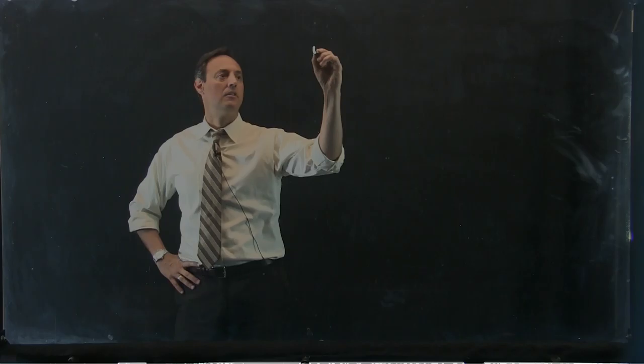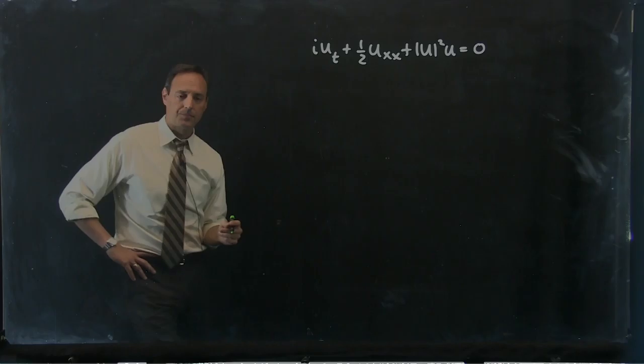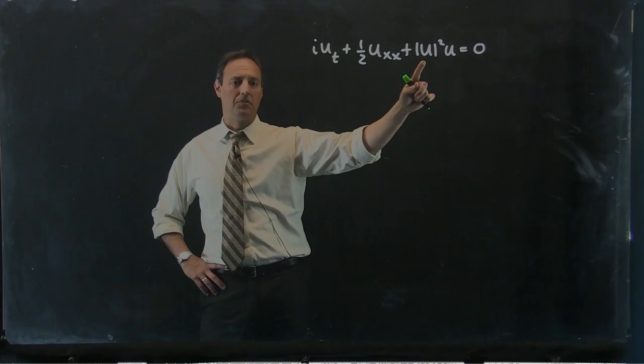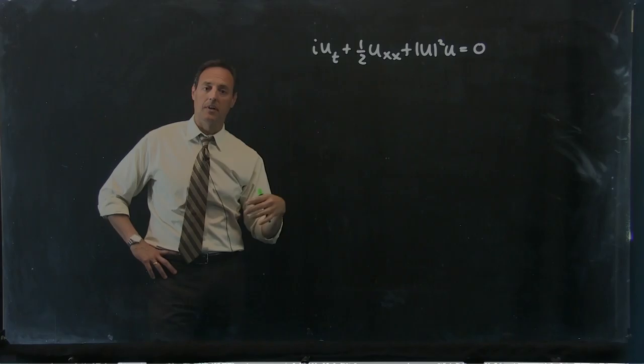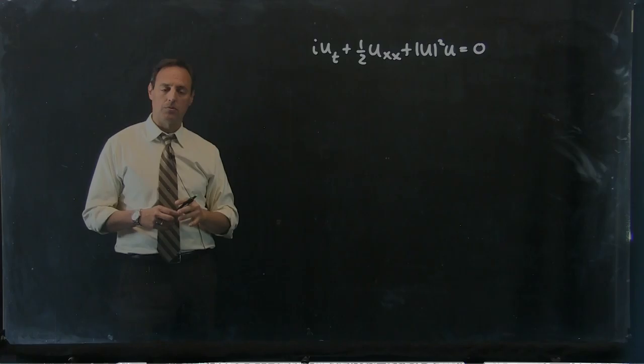The equation we're going to consider is one of my favorites: the nonlinear Schrödinger equation. It has time, space, and a dispersive term. It's very similar to the harmonic oscillator we considered previously, except now the potential is a nonlinear function of u itself. This equation is a classical, canonical model for nonlinear wave evolution, and we want to talk about how to implement some scheme and take advantage of reduced dimensions.